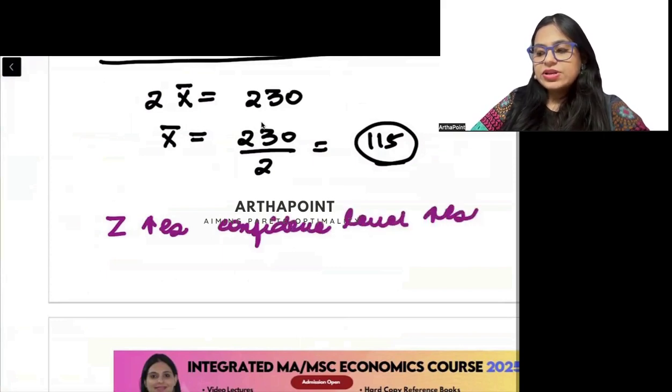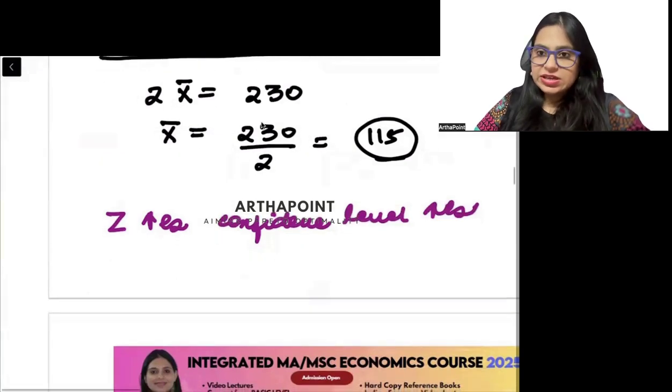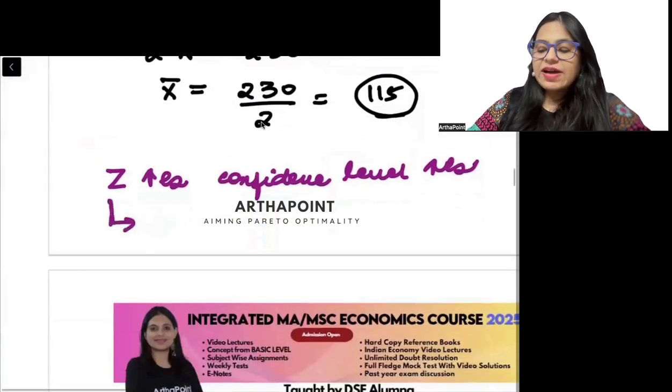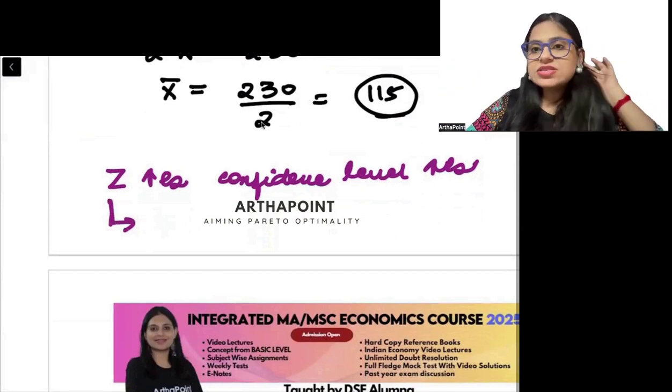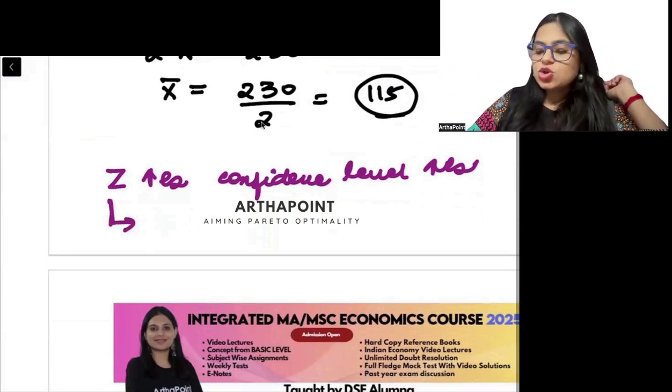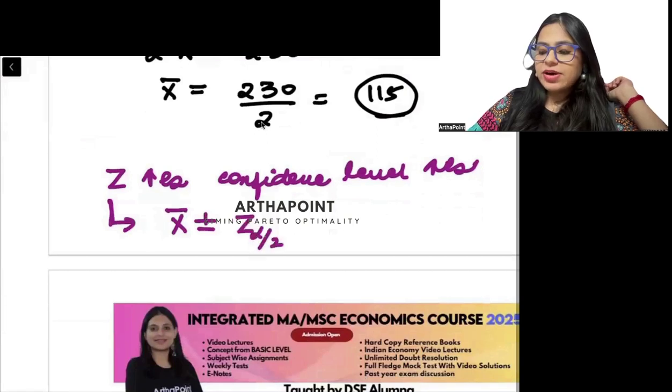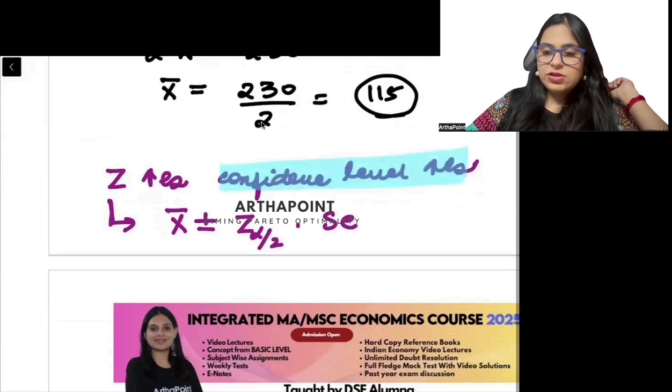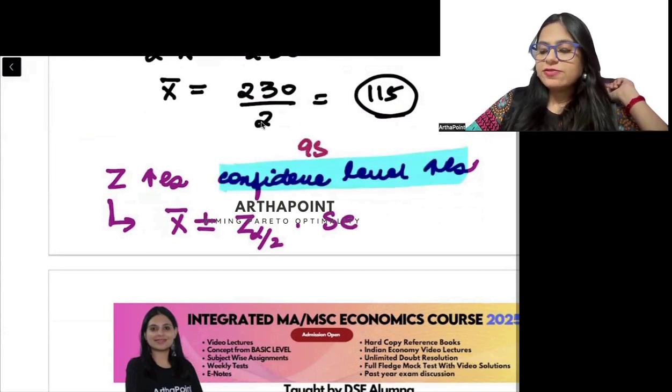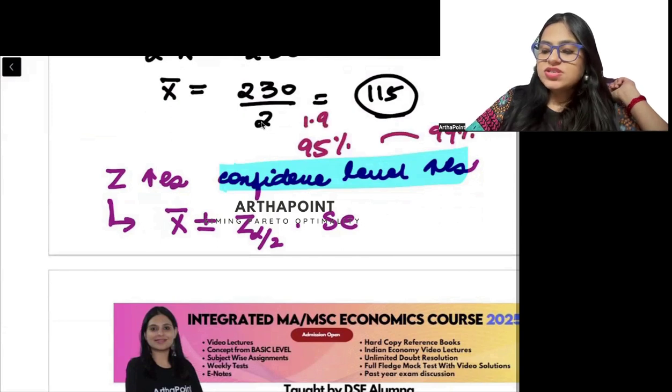Z value increases as confidence level increases. And as z value increases, the width of your confidence interval also increases. So your confidence interval is x bar plus minus z alpha by 2 into standard error. Now the more the confidence level, so for example, when I go from 95% to 99%, my value of z goes from 1.96 to 2.56. It is increasing.